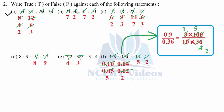Part b: 21 is to 6. Since 7 threes are 21 and 2 threes are 6, that gives 7 is to 2. Here 7 fives are 35 and 2 fives are 10. They are equal and therefore in proportion: True.